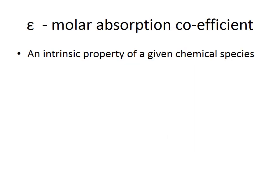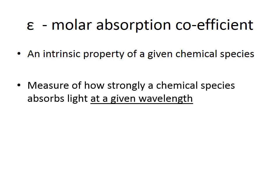Epsilon, or the molar absorption coefficient, is an intrinsic property of a given chemical species. It is a measure of how strongly a chemical species absorbs light at a given wavelength. It is important that when you are given epsilon, you match the absorption you measure to that given wavelength, because the absorption coefficient will change depending on the wavelength. The units of epsilon are liters per mole per centimeter.